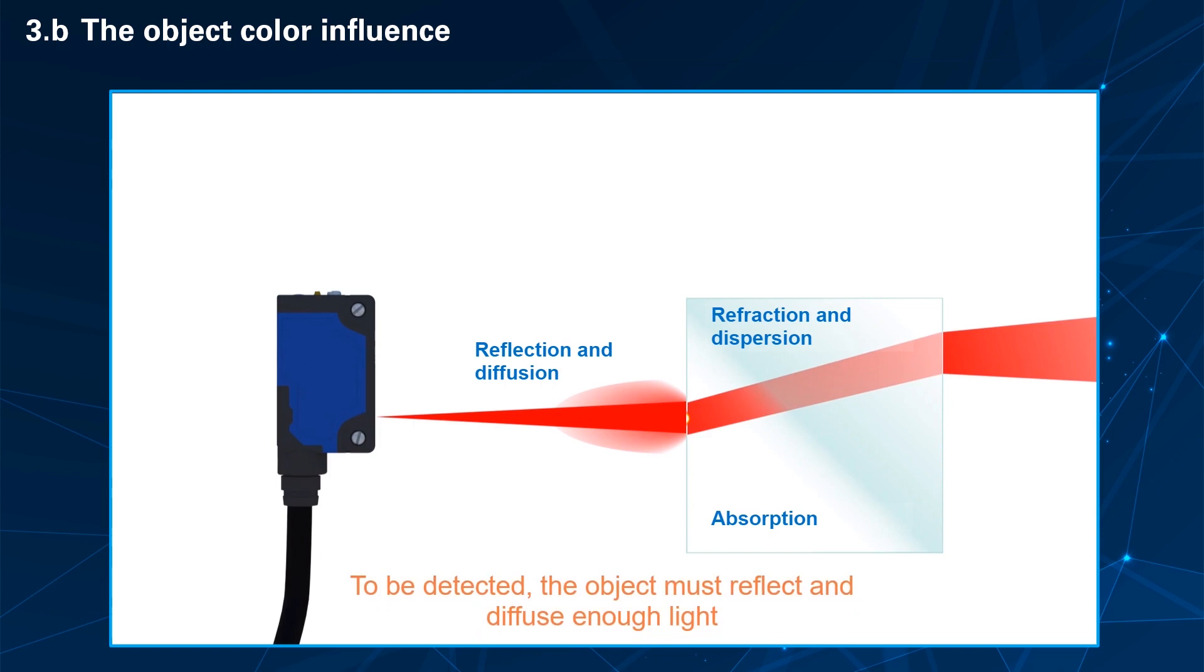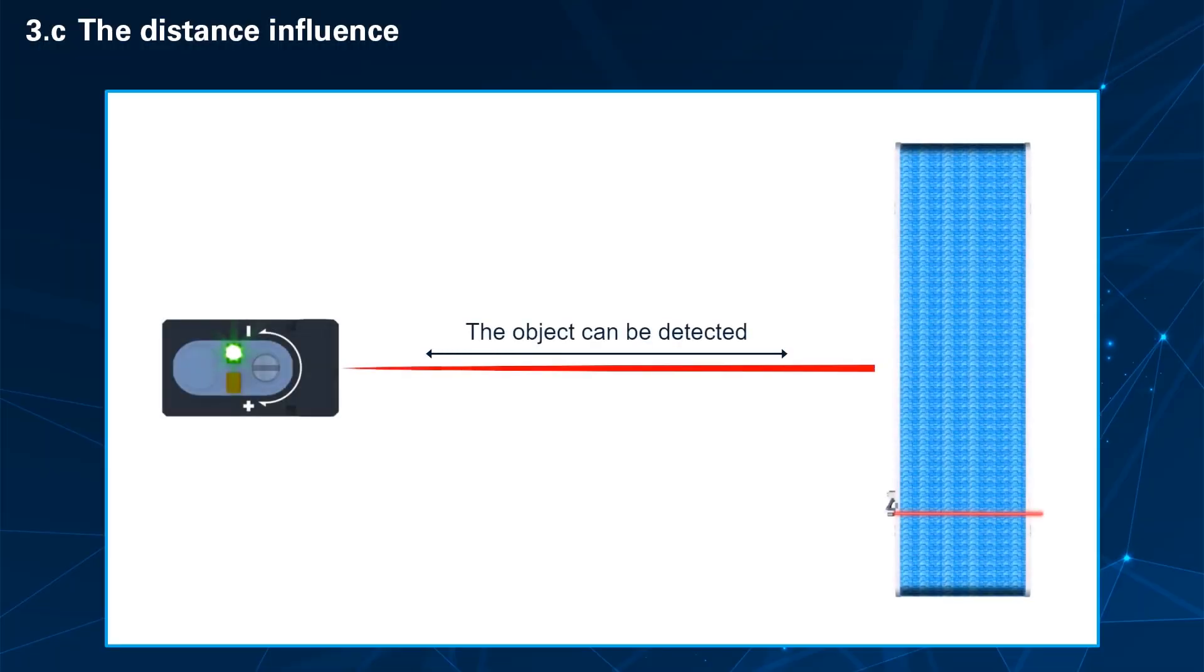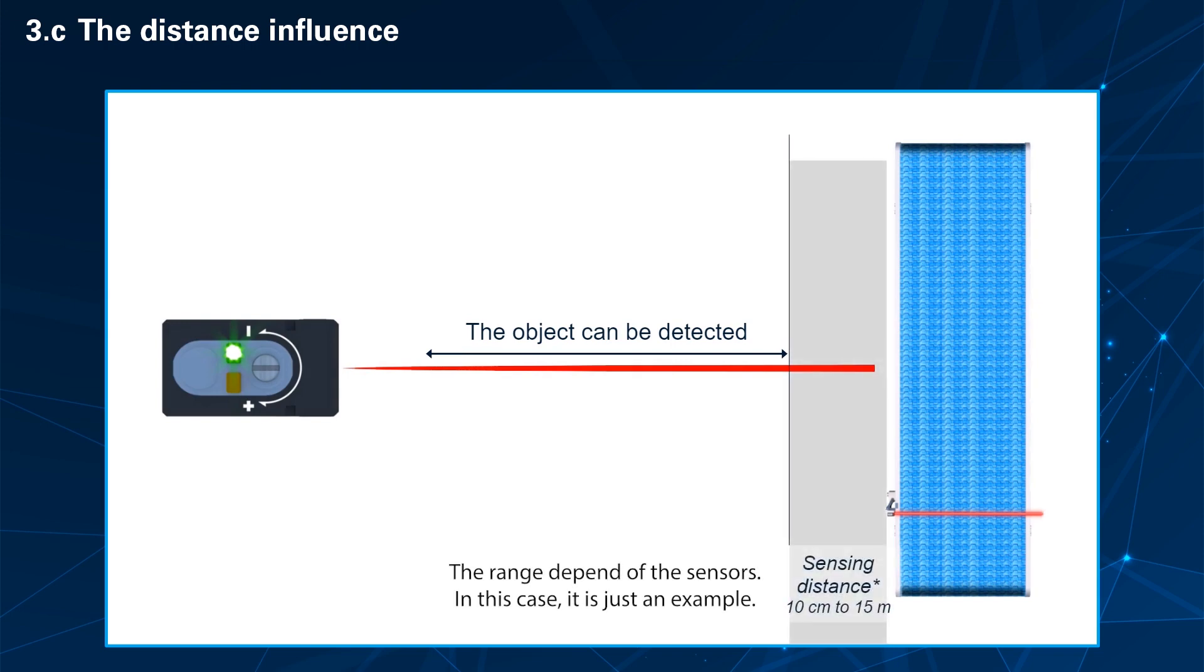To sum up, in order to be detected, the object must reflect and diffuse enough light. That's why white objects could be easier to detect than grey or black ones. Opaque objects are easier to detect than the transparent ones. The object can be detected if it is within a zone delimited by the sensing distance, which varies with the type of object, the environment, and the characteristics of the sensor, and the blind zone, which varies from 0 to 10 millimeters according to the detection mode.